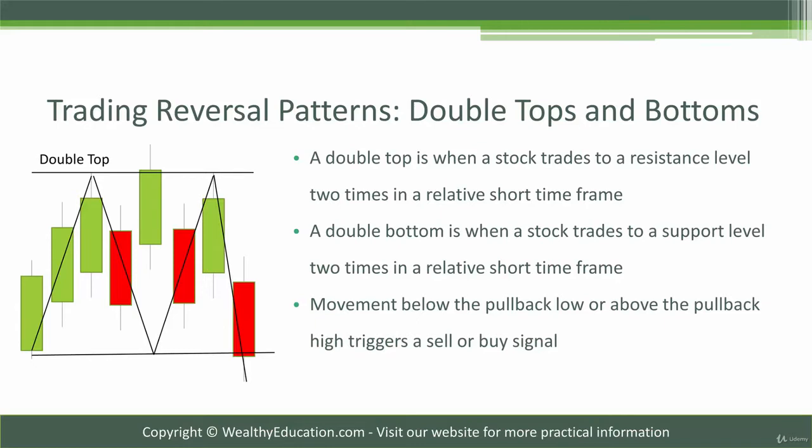The stock has a pullback, and instead of rising and going through resistance the second time, which would confirm the bullish pattern, the stock peters out at the top a second time, showing that the bears are now in control. Then the completion of the pattern, when the stock drops lower than the first pullback, indicates a reversal in the bullish trend, and that the bears are now in control of the stock.